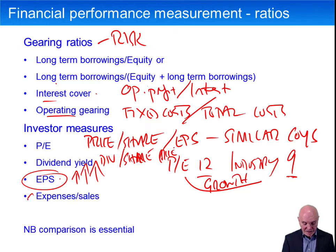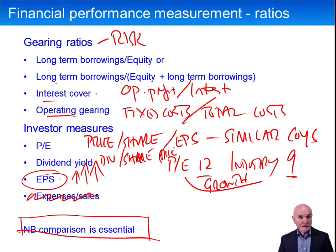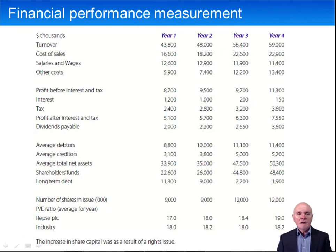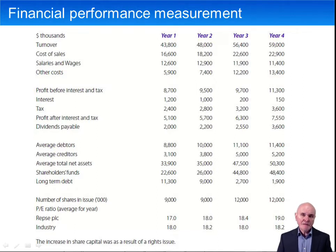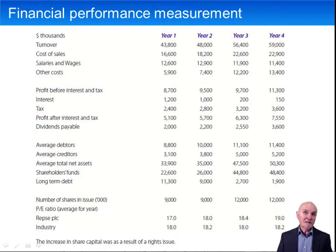The key to all ratio analysis is really comparison — comparing to previous years of the same company, sometimes to similar companies, sometimes to industry averages. Here's the example from chapter 10: you are asked to decide whether four years worth of figures support the contention that the company has managed to increase shareholder wealth. This means ratios such as receivables collection period, current ratio, and even gearing aren't going to be directly relevant; we're much more interested in what shareholders care about — share price, earnings per share, dividends, and overall profit.